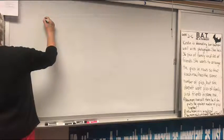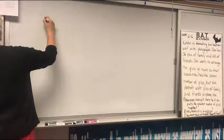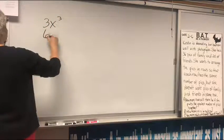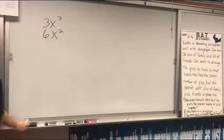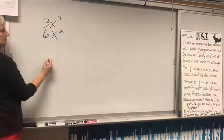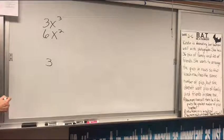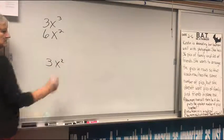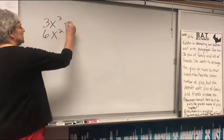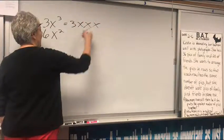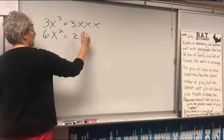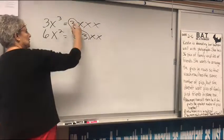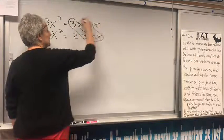Greatest common factor of 3x cubed and 6x squared. What's the biggest number that goes into both of them? What's the most amount of x's in any one row? 2. 3x squared. Now, what this is, is 3x, x, x. This is 2 times 3x, x. In common, there's your 3 and there's your x squared.